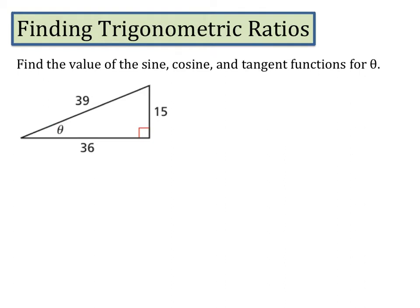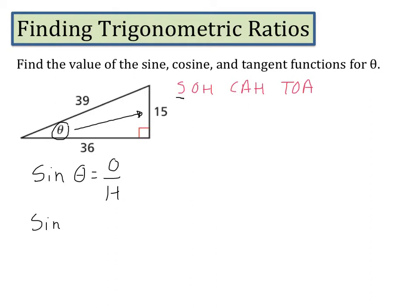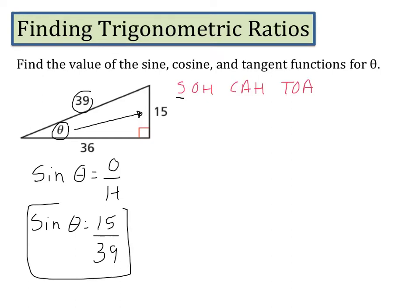In this example, we want to find the value of sine, cosine, and tangent for the functions of theta. Starting with sine — remembering SOH-CAH-TOA — sine is opposite over hypotenuse. The opposite of theta is 15, so sine of theta is 15 over the hypotenuse, which is 39.